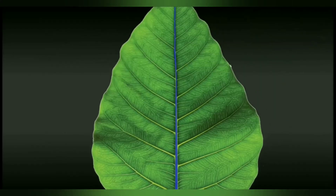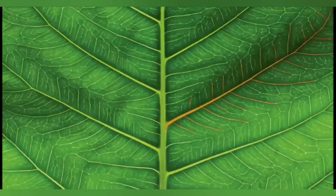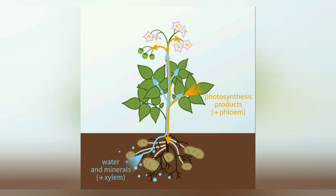A mid vein, or midrib, is seen running along the middle of the leaf. There are a number of side veins emerging from the midrib. The midrib and side veins have small tubes inside them, and these tubes are of two types.